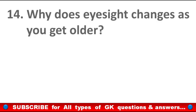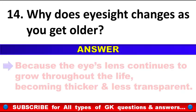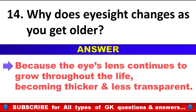Why does eyesight change as you get older? Answer: Because the eye's lens continues to grow throughout life, becoming thicker and less transparent.